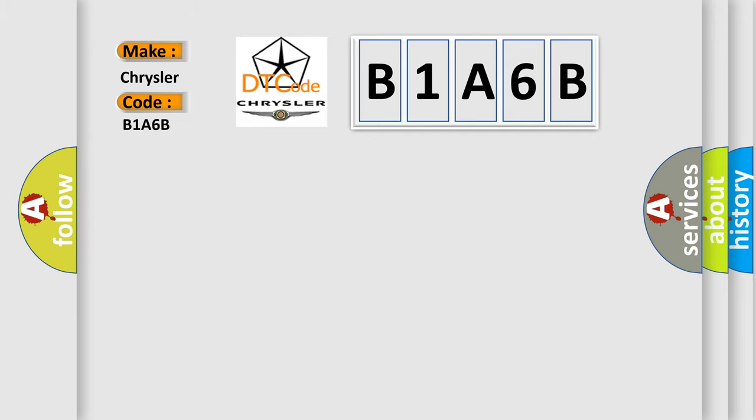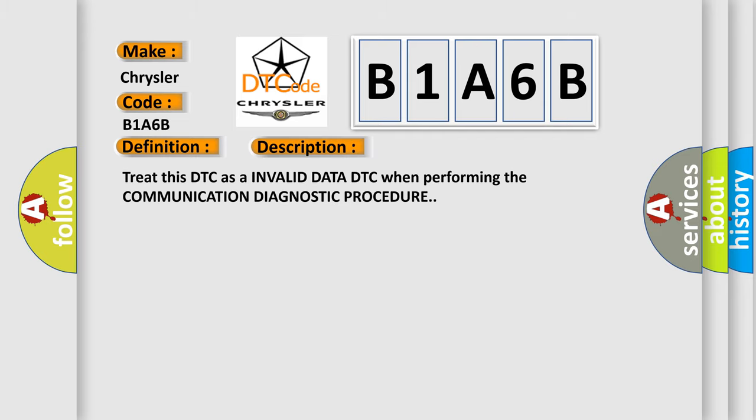The basic definition is: automatic or robotic gearbox signal fault, signal invalid. And now this is a short description of this DTC code. Treat this DTC as an invalid data DTC when performing the communication diagnostic procedure.